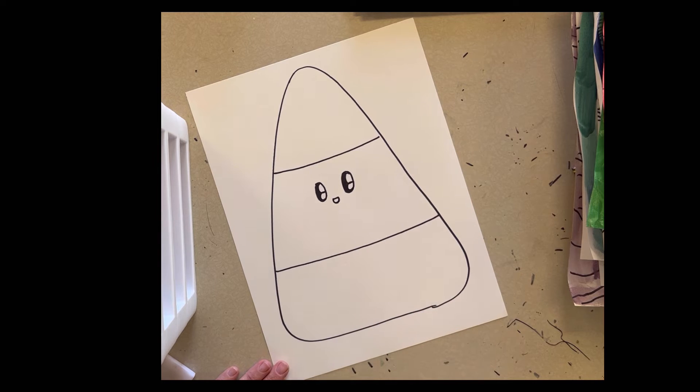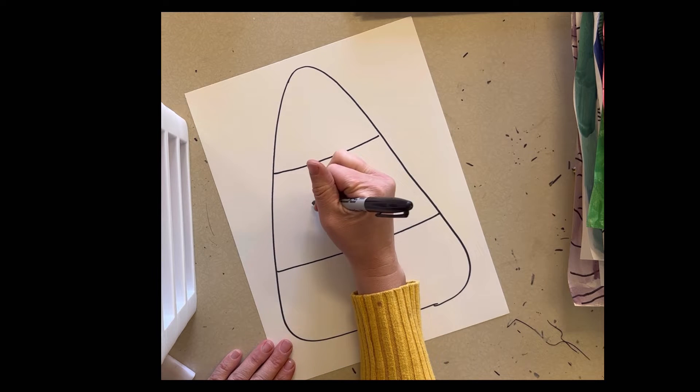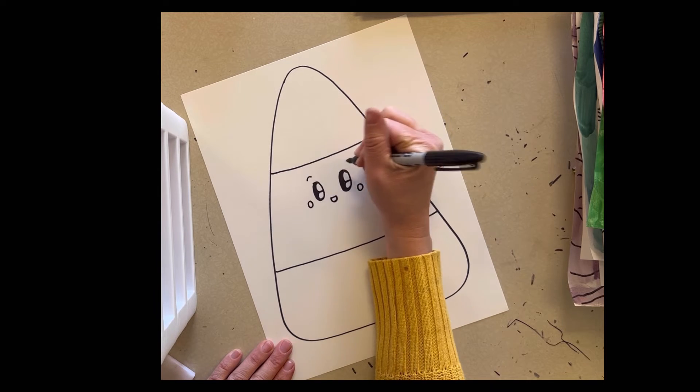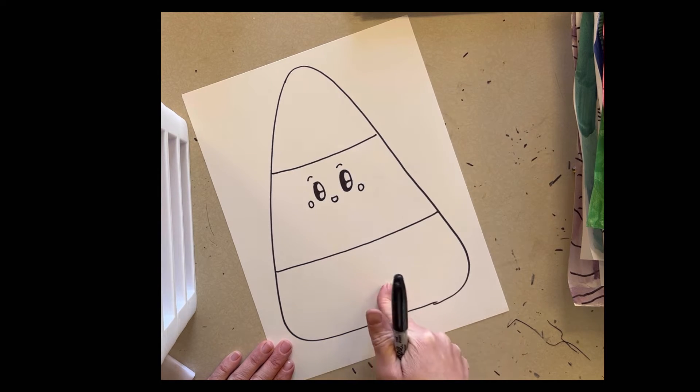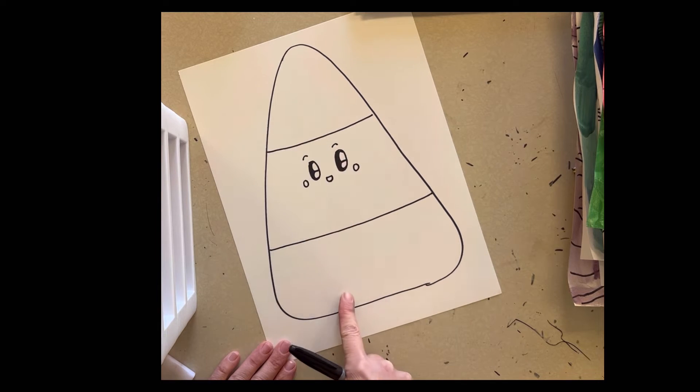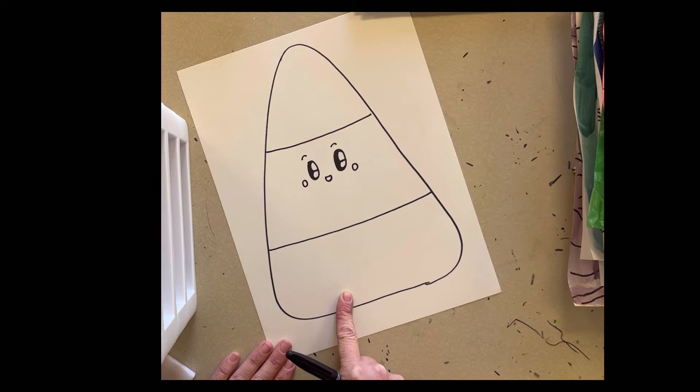Then in the top and the bottom, even in here a little bit if you want, you are going to give your candy corn some patterns. I'm going to do some line patterns up here and some shape patterns down here.